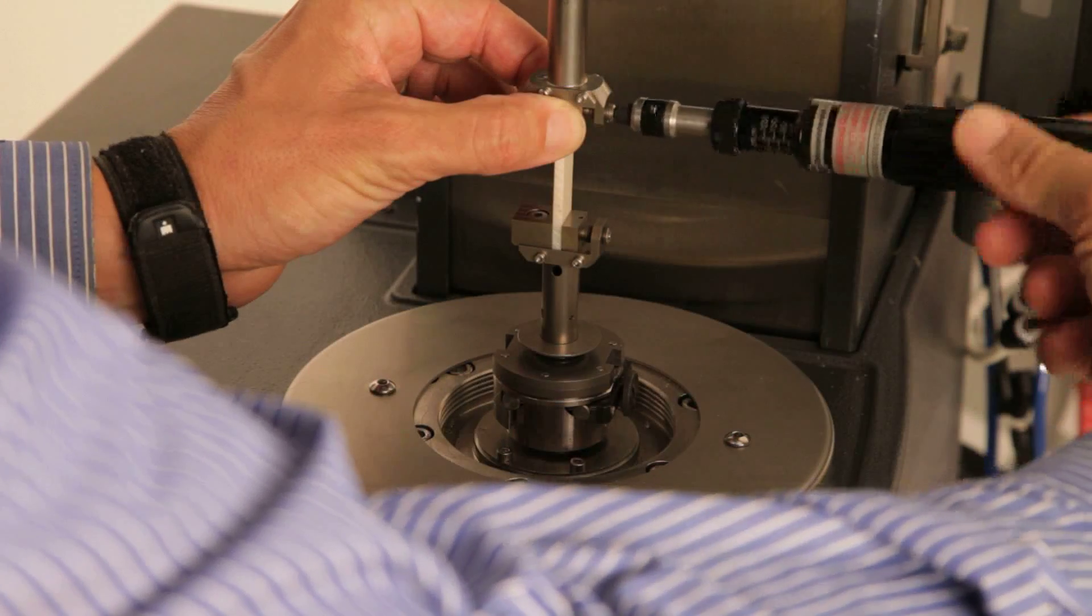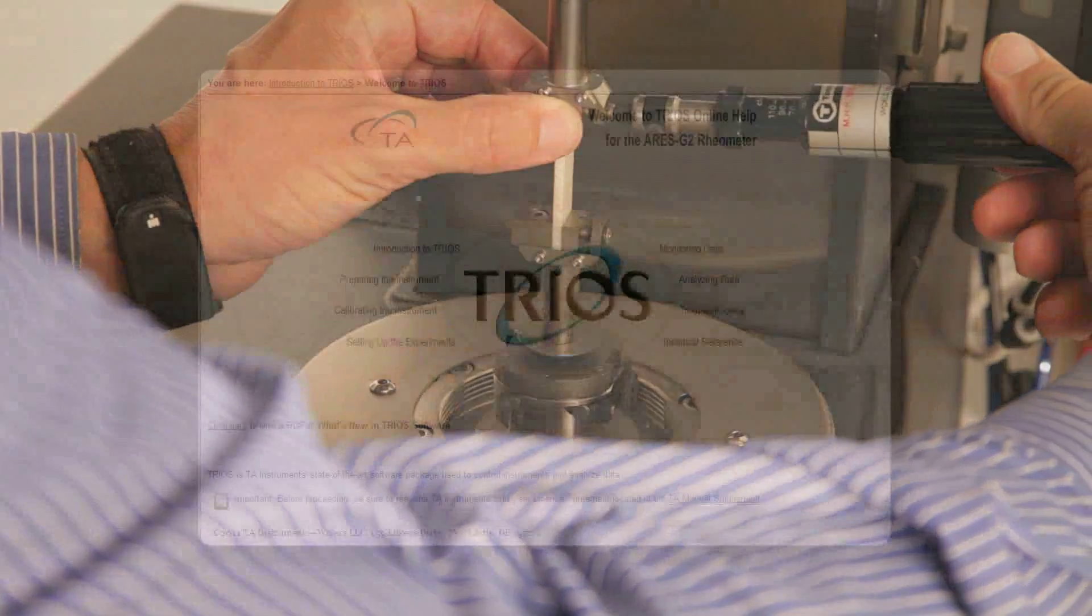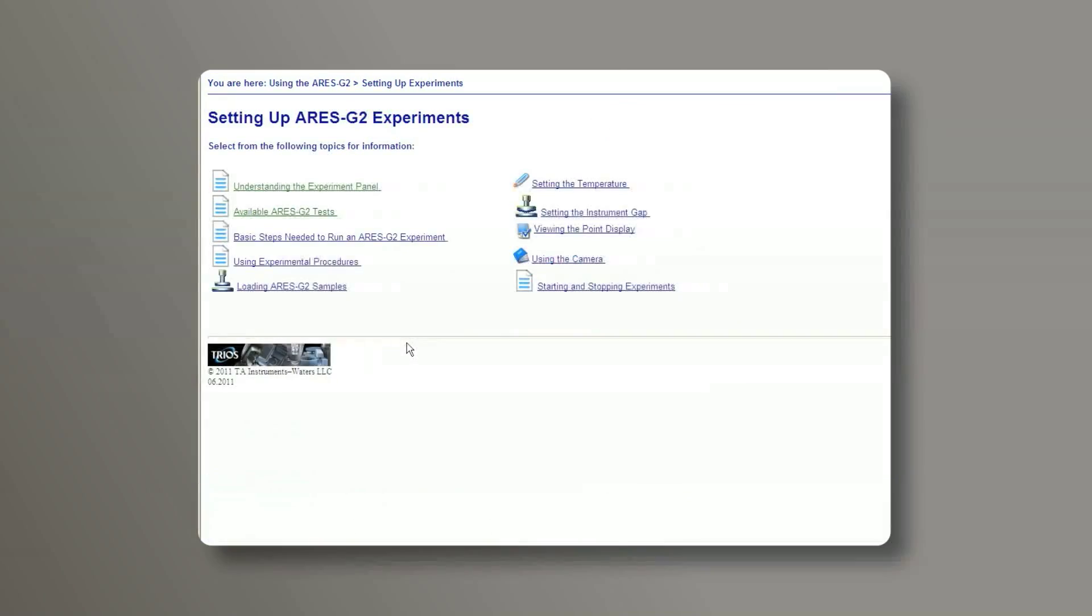Now tighten both clamps to the appropriate torque for your sample. A torque tightening guide is available in the TRIOS help.